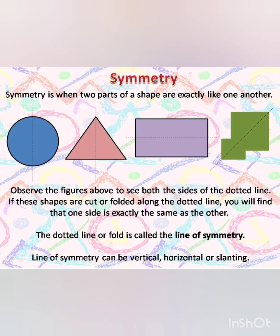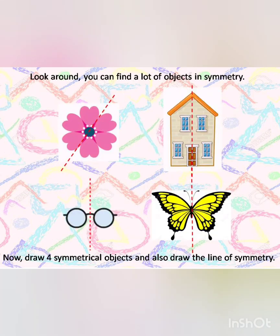The line of symmetry can be vertical, horizontal, or slanting. Now look around — you can find a lot of objects in symmetry. Can you observe the line of symmetry in the given flower, hut, spectacles, butterfly?